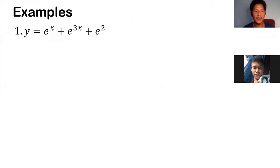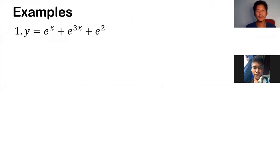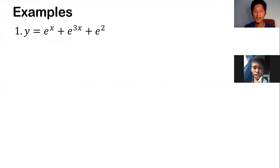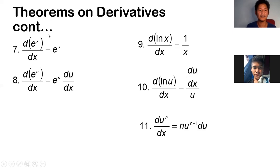So how do we get the derivative of y equals e to the x plus e to the 3x plus e squared? Notice we have a few exponential functions where the exponents are different. The first term is just plain e to the x, so we'll just use rule number 7.